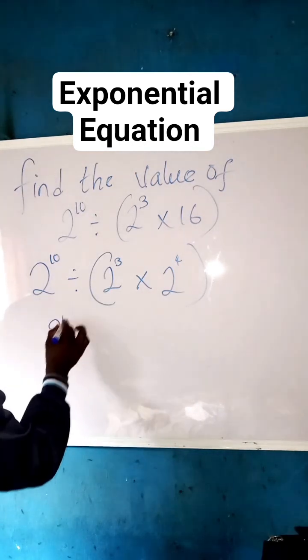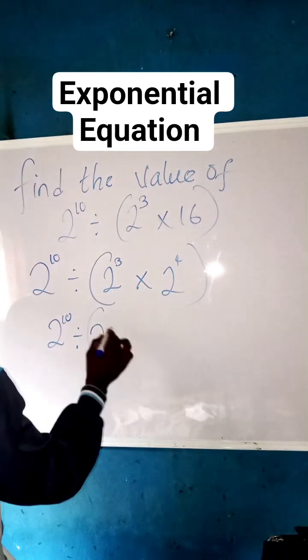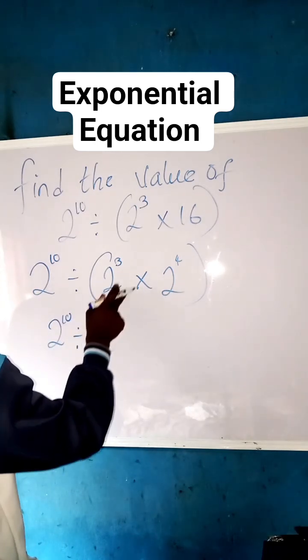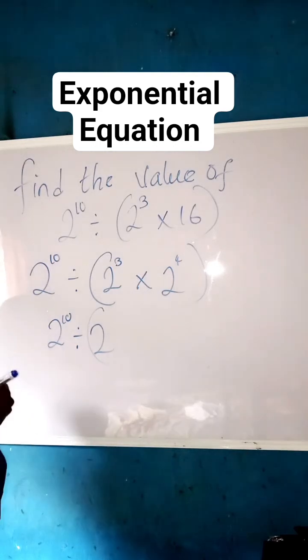So now having done that, we say 2 raised to the power of 10 divided by 2 raised to the power of 3. You know we are having the same base with different powers and they are multiplying each other, which means...